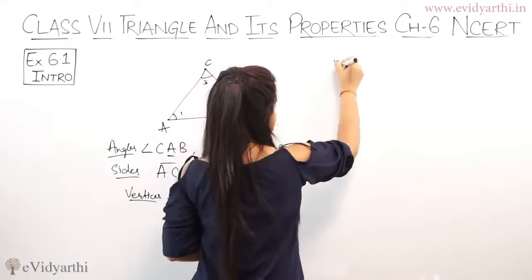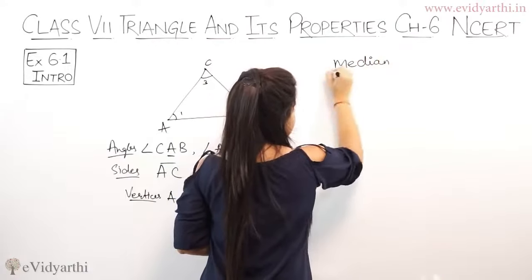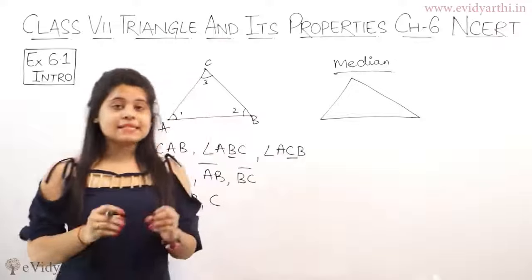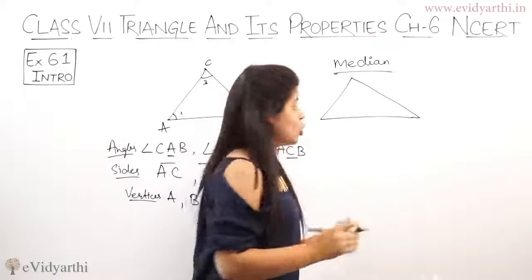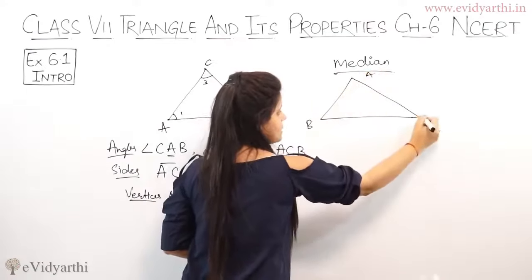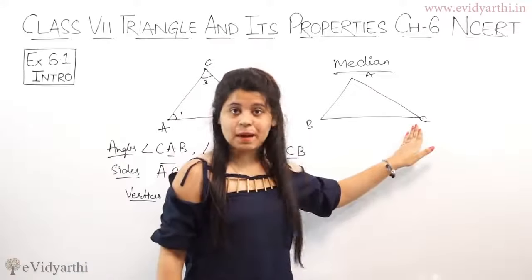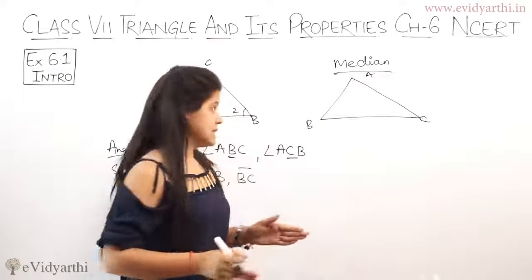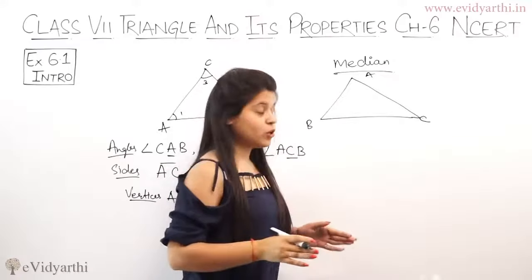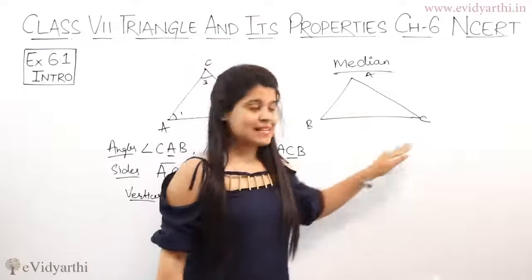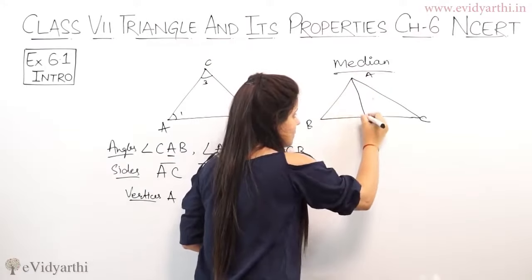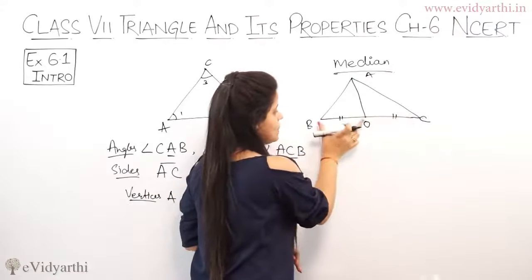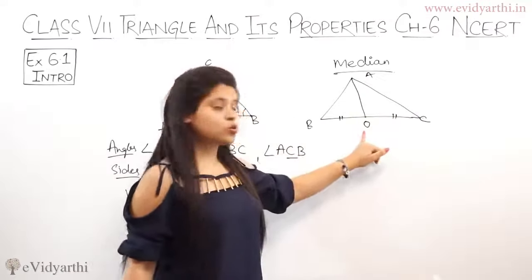Next comes the median. What is a median in a triangle? Let's take this triangle again and name it A, B, C. The median is a line segment that starts from a vertex and goes to the opposite side, where it cuts the opposite side at its midpoint. So from vertex A, the opposite side is BC. The line segment from A meets BC at its midpoint O, so the two halves are equal — meaning BO equals OC.